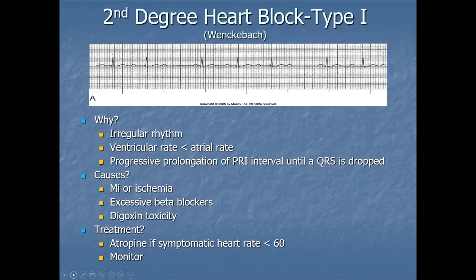Second degree heart block type 1 — Wenckebach: longer, longer, longer, drop — now you've got a Wenckebach. The PR interval gets progressively more elongated until a QRS is dropped. The rhythm is irregular, ventricular rate is less than atrial rate, and there's progressive prolongation of the PR interval until one is dropped. Causes include MI or ischemia, excessive beta blockers, and digitoxicity. Treatment: atropine if the patient is symptomatic with a heart rate less than 60, and careful monitoring.